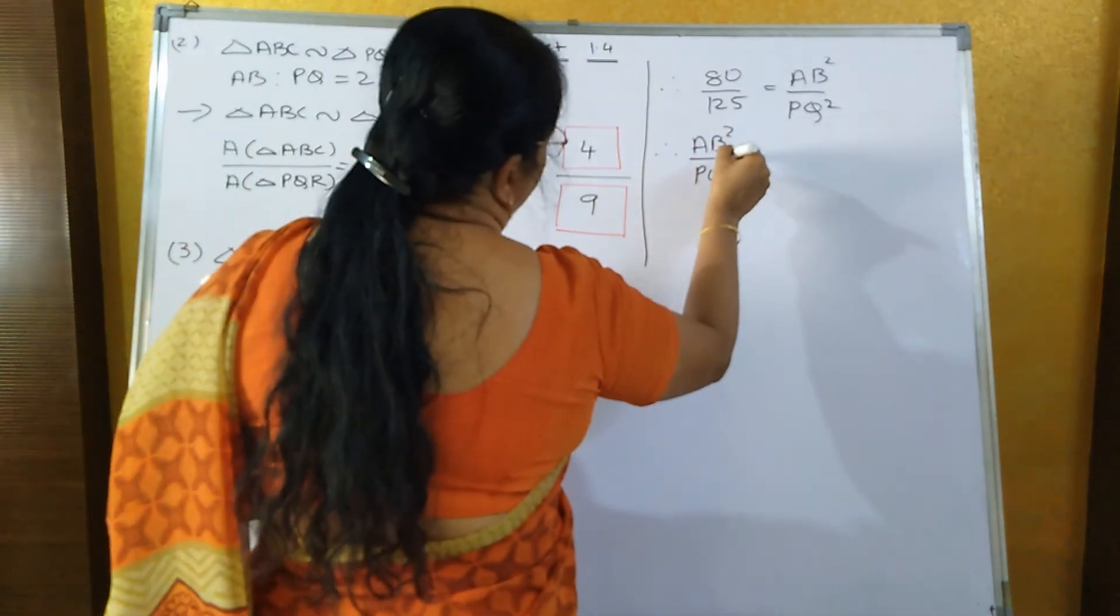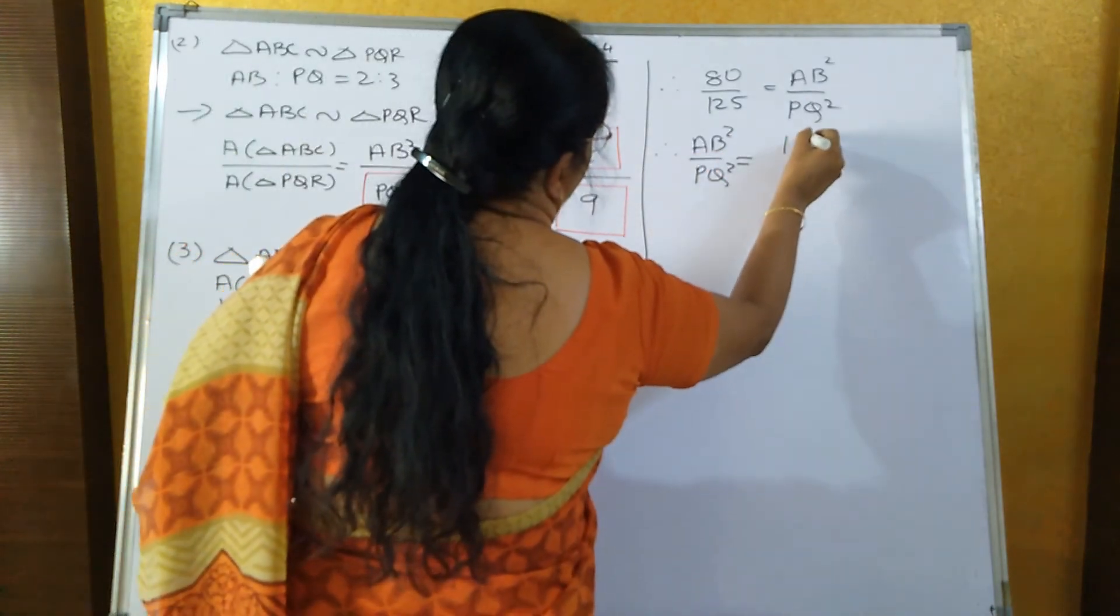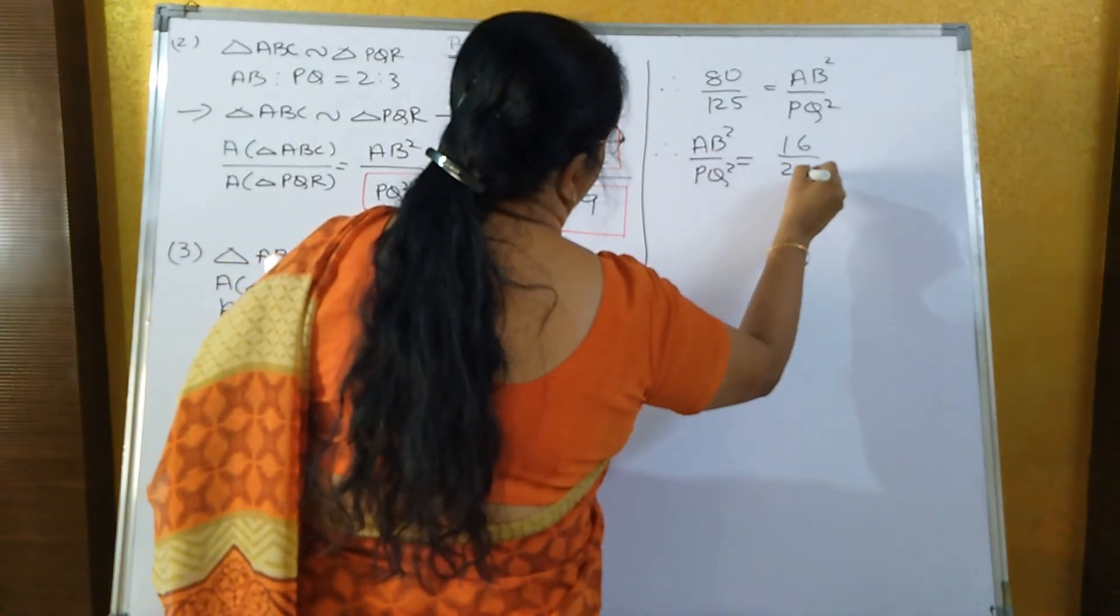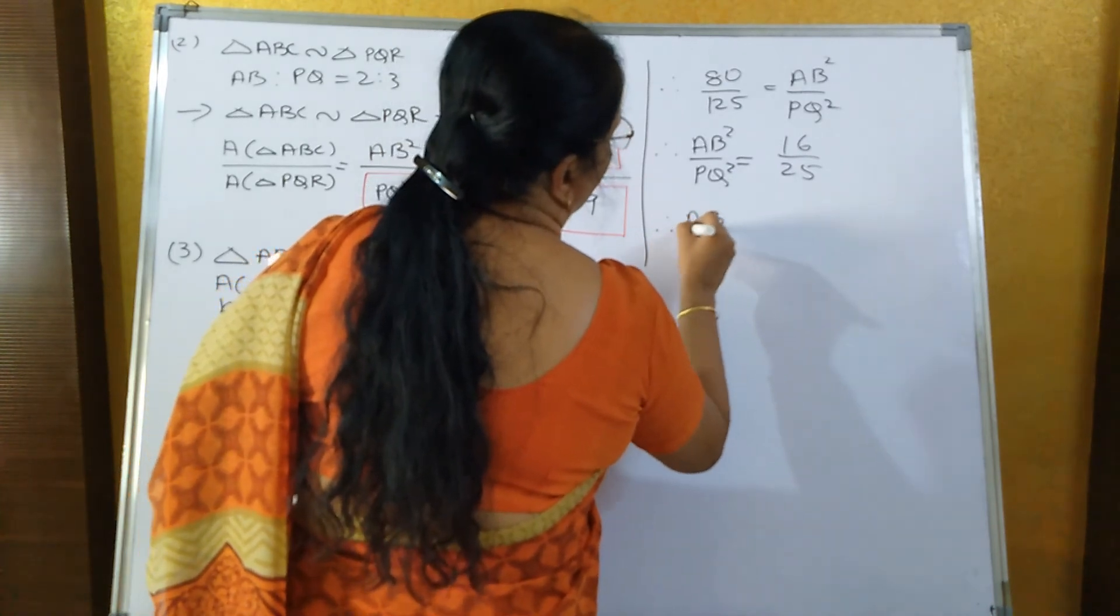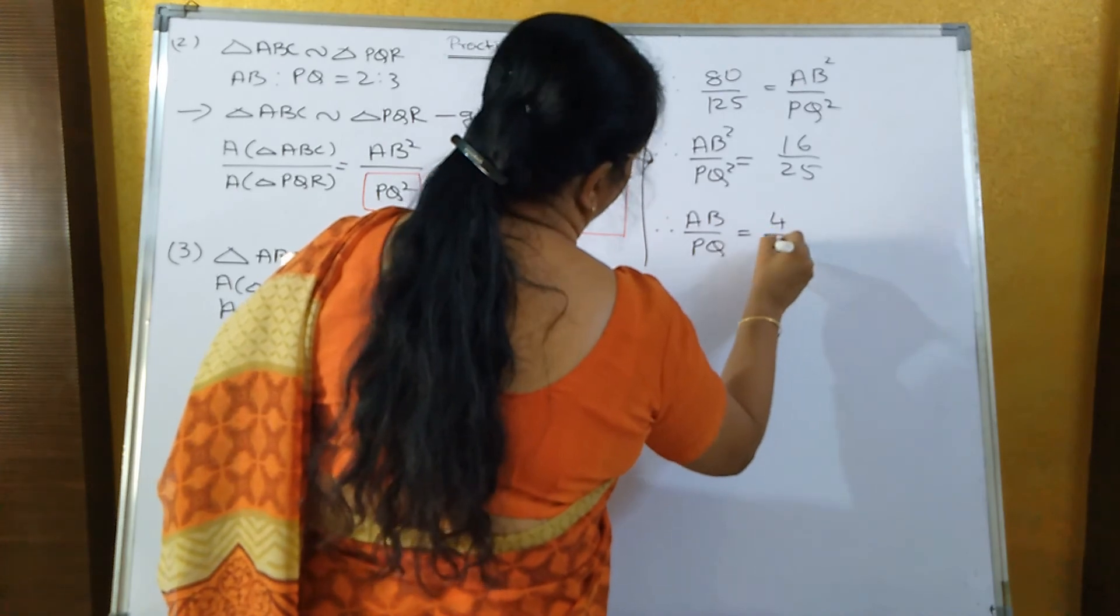So when you divide it by 5 it will go 16 upon 25, therefore AB upon PQ, what is the value of AB upon PQ? That is equal to 4 upon 5.